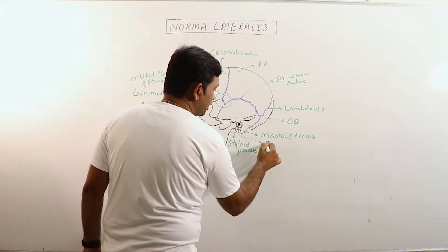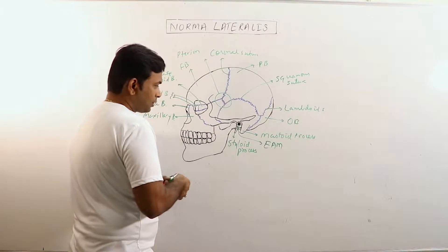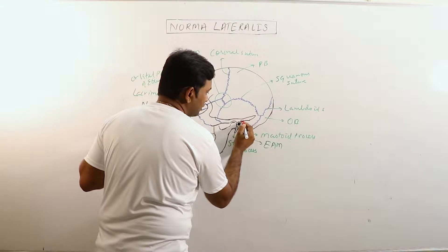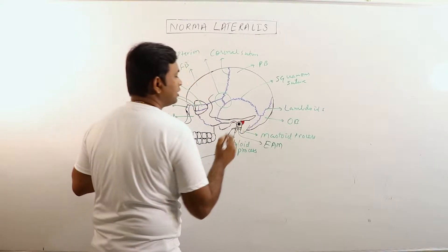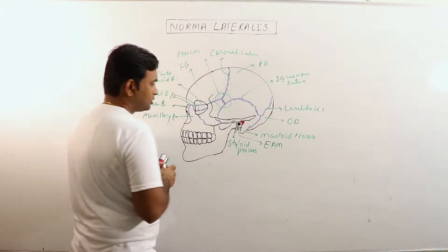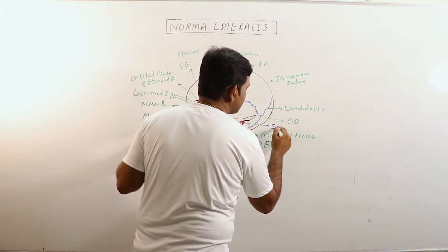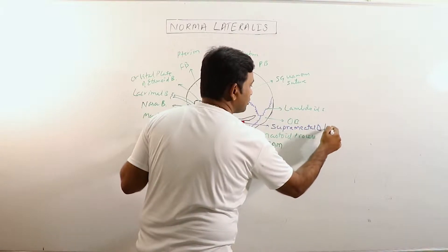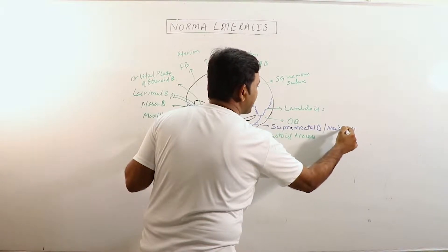This is the external auditory meatus. Now this region just superior and posterior to the external auditory meatus is known as the suprameatal triangle, or MacEwen's triangle.